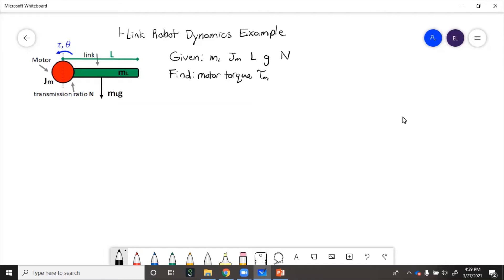This is basically a motor driving a load. The motor has moment of inertia J_M, and the link connected to it has mass M_L and length L. There is a transmission ratio between the motor and the load. The transmission ratio is n, so theta of the motor equals n times theta of the link.